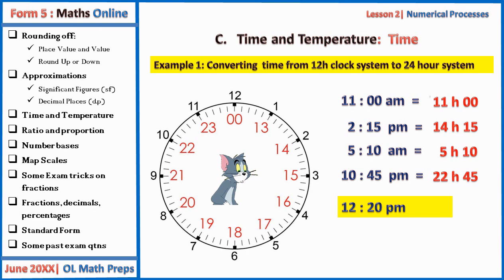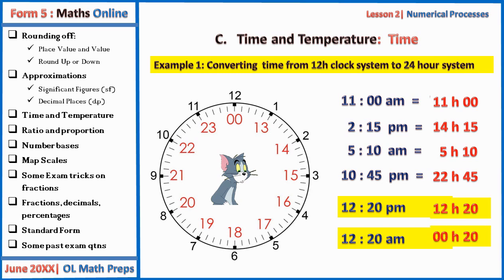A tricky case: 12:20 pm, which is in the afternoon, is maintained on the 24-hour clock as 12:20. However, 12:20 am is during the first 12 hours of the day, so on the 24-hour clock it becomes 00:20. Take note of this important distinction.